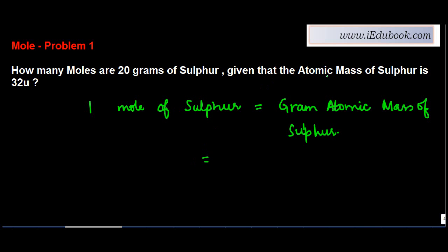Now you are given that the atomic mass of sulphur is 32u. Or in other words, we can write this as 32 grams. So one mole of sulphur is equal to 32 grams. But how many grams of sulphur do we have? We have 20 grams.